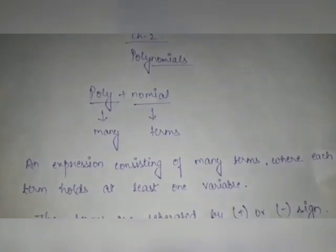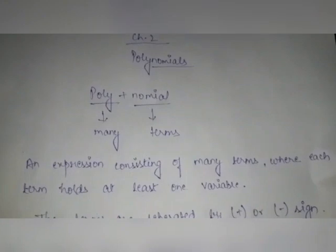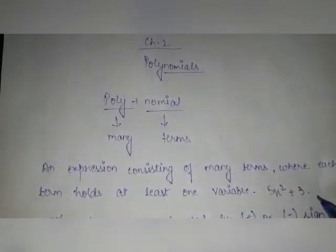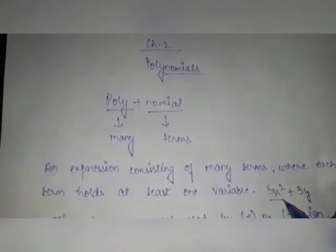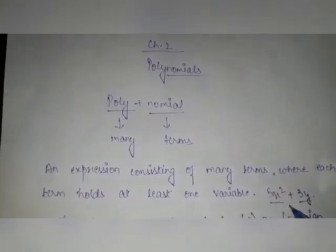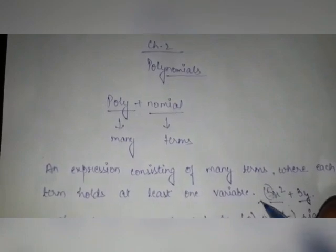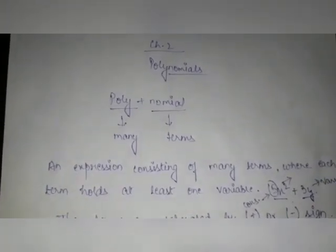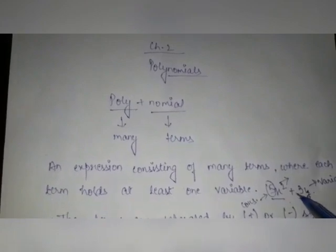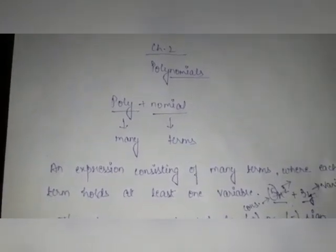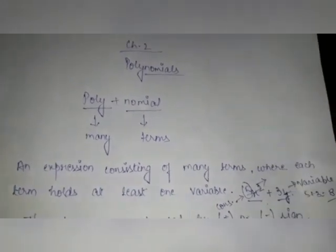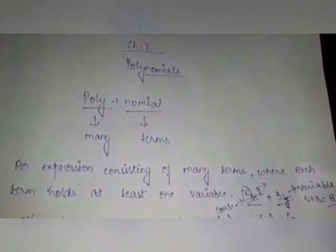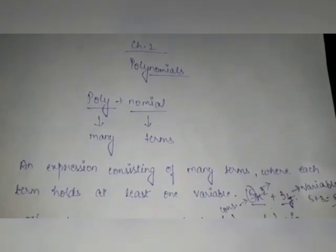You must be knowing variables and constants. For example, if we write 5x² plus 3y, then 5x² is one term and 3y is another term. Here, 5 is a constant and x or y are variables. If we remove the variables, we just get 5 plus 3 equals 8, and that 8 won't be called a polynomial. So it is necessary that variables are present with each term.